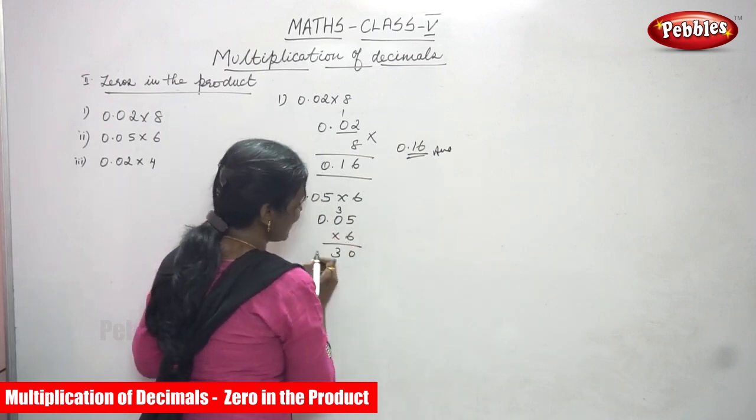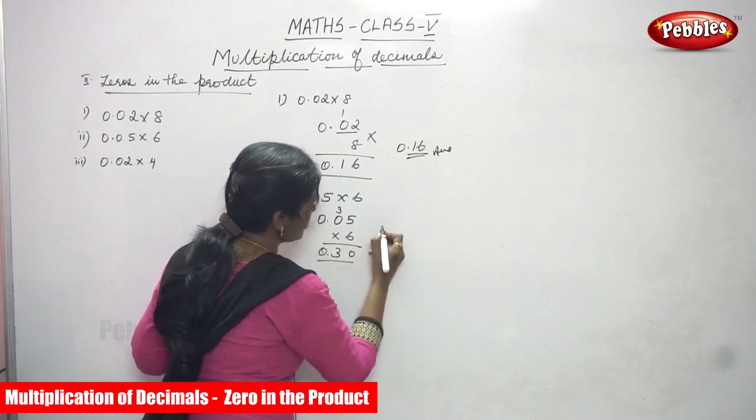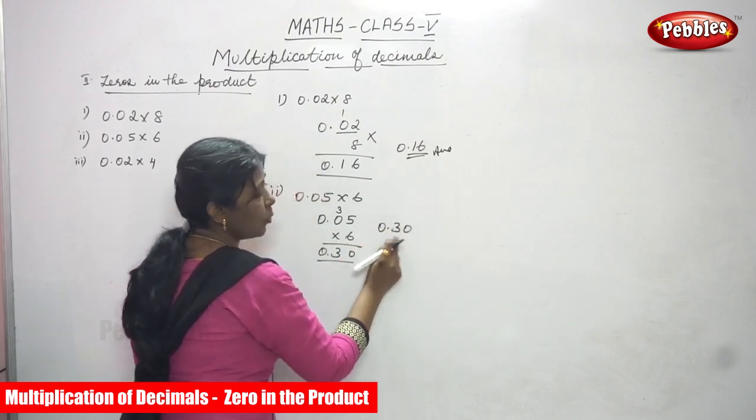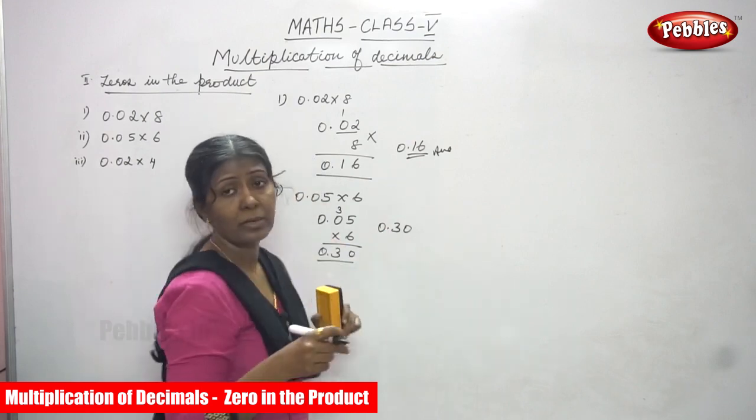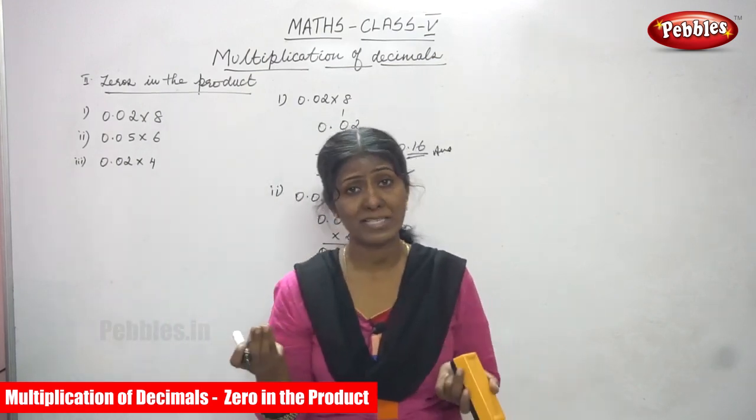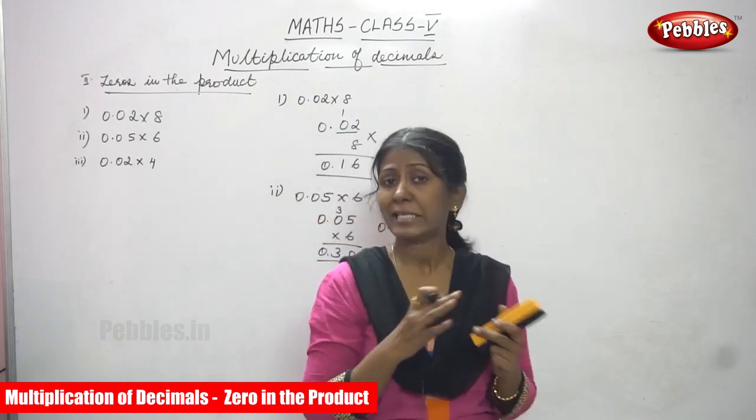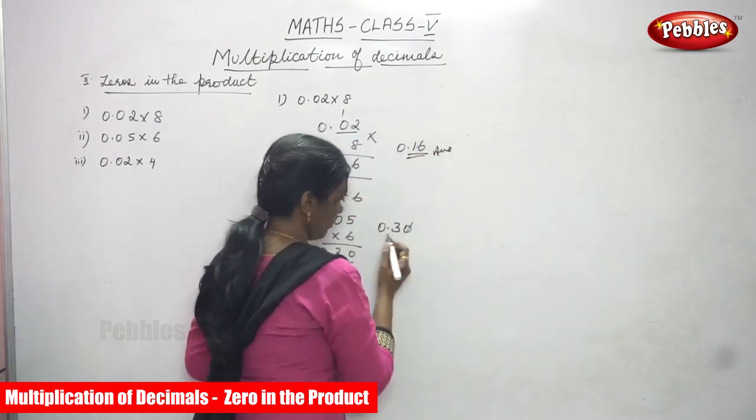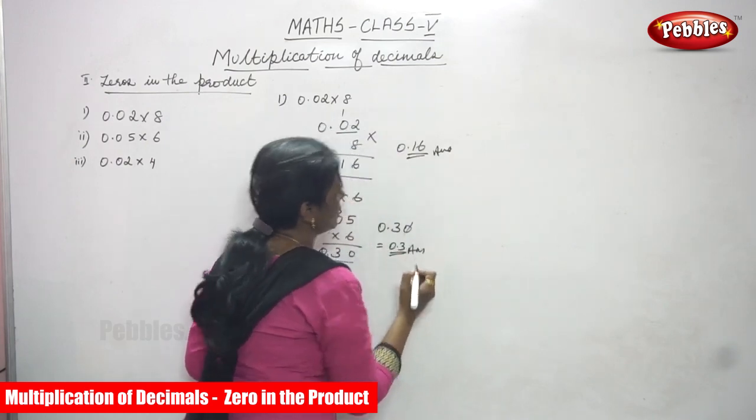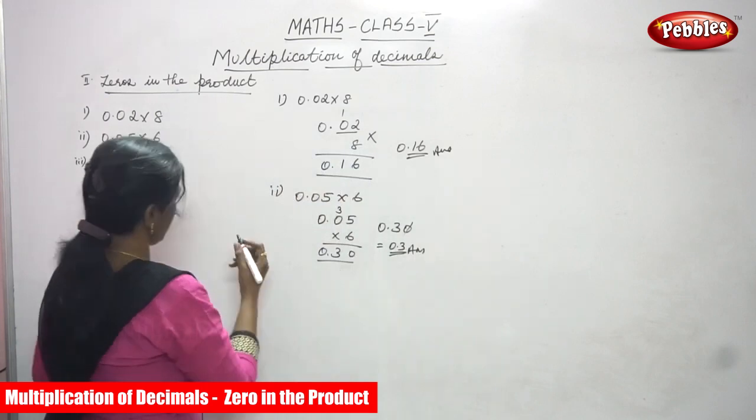Then again 0 into 6, 6. See 0.30. So the product value is 0.30. But I told you already after the point if you write how many zeros or if you add how many zeros there is no value. So just cancel the 0. The answer is 0.3. Exactly correct.